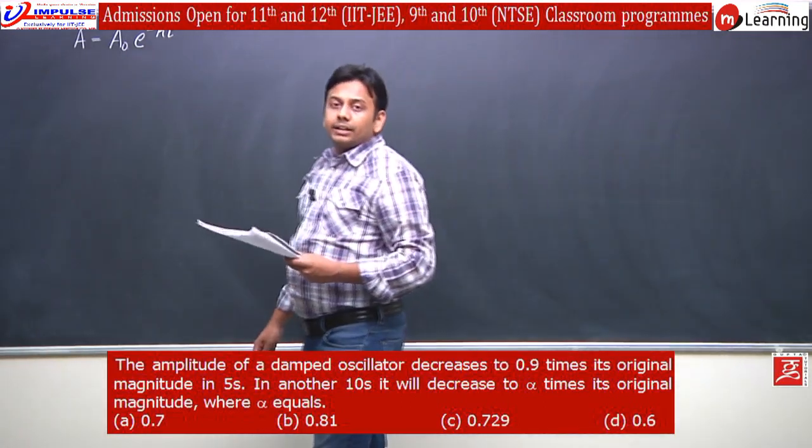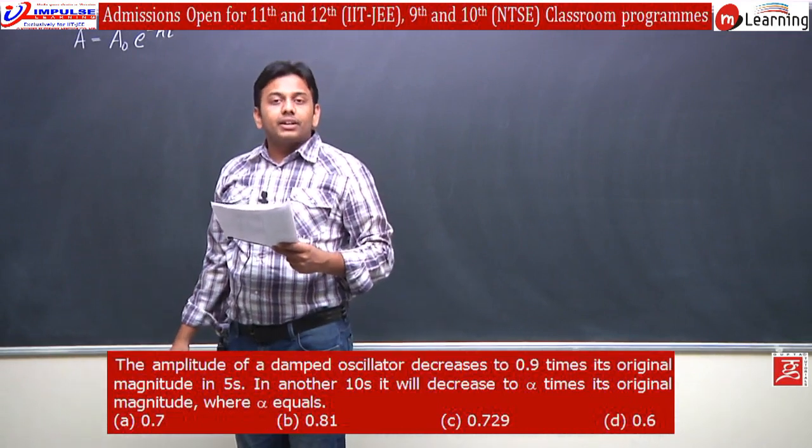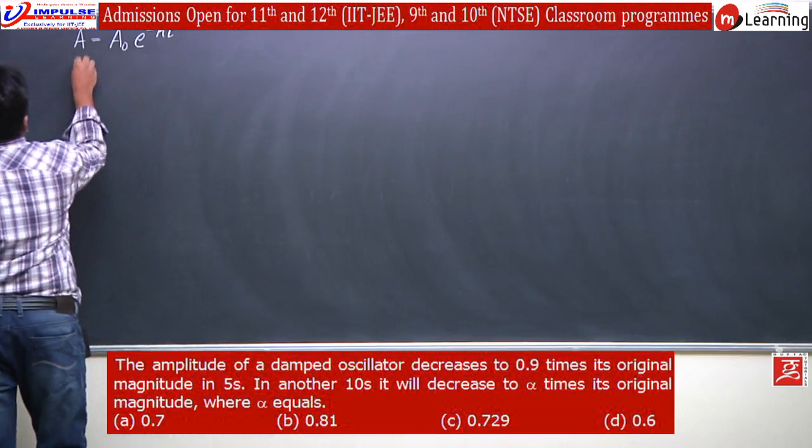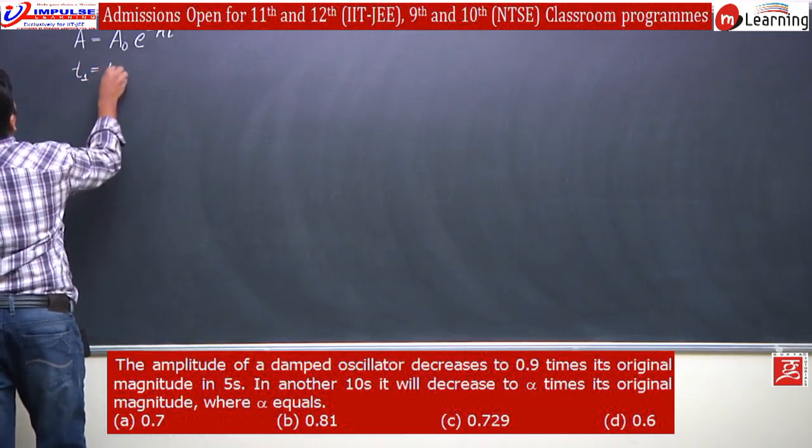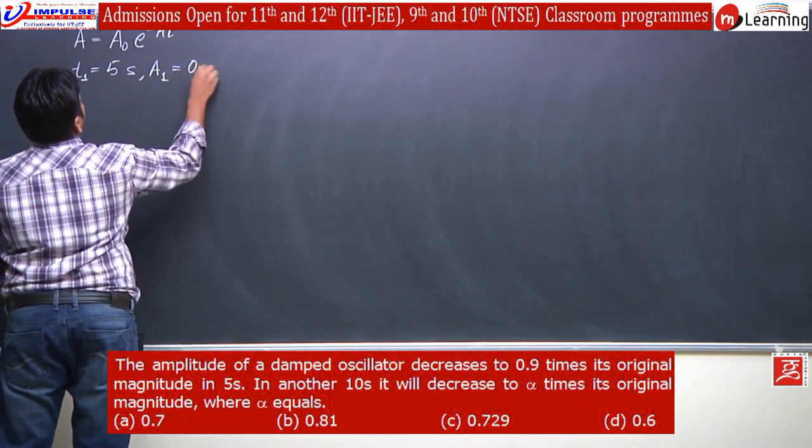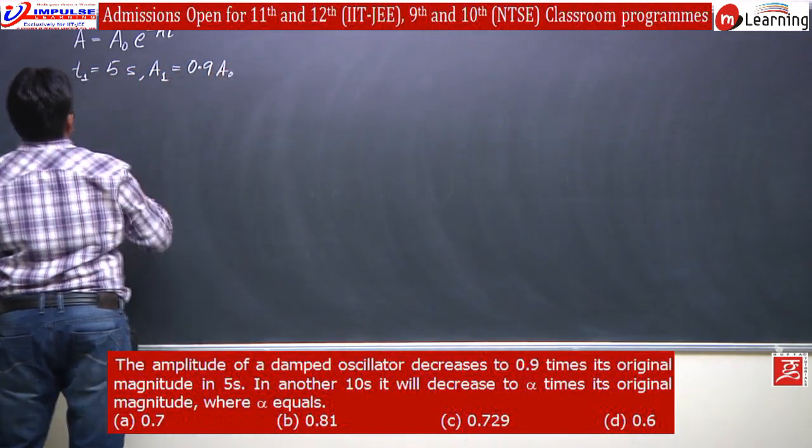Now, the data given here is that at time 5 seconds the amplitude becomes 0.9 times. At t1 equal to 5 seconds, A1 is equal to 0.9 times A0.